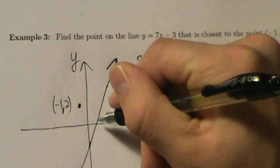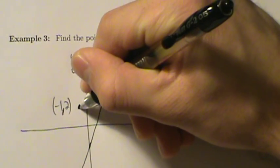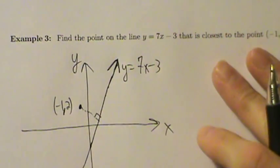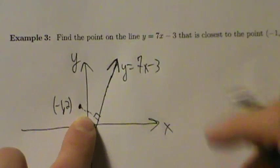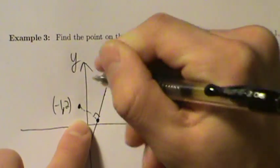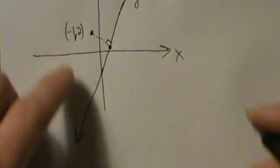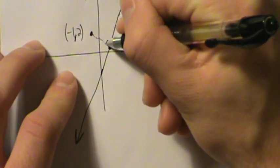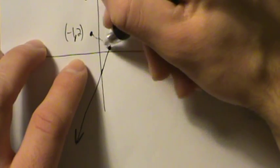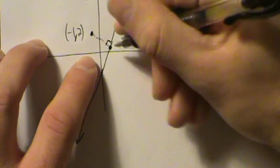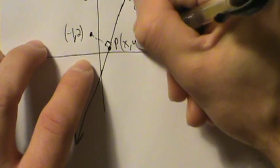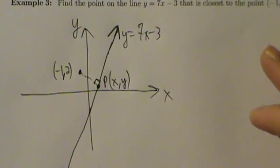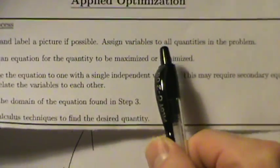The point on this line that's going to be closest is if we draw a line segment from this point to the line — the perpendicular distance here gives us the closest point. We could come all the way over and find a point here, but the closest one is the one that makes this line segment perpendicular. So just this straight-shot perpendicular line — wherever that point is, that's going to be P, x comma y.